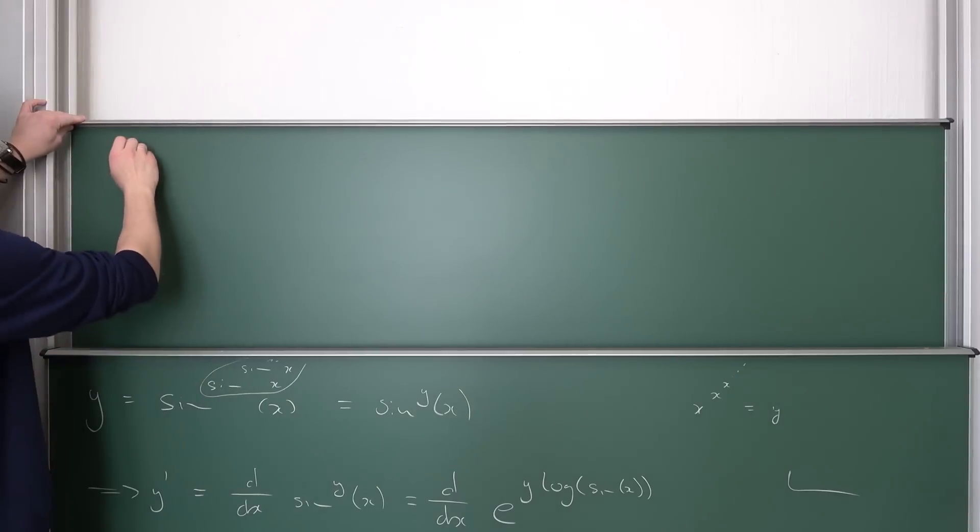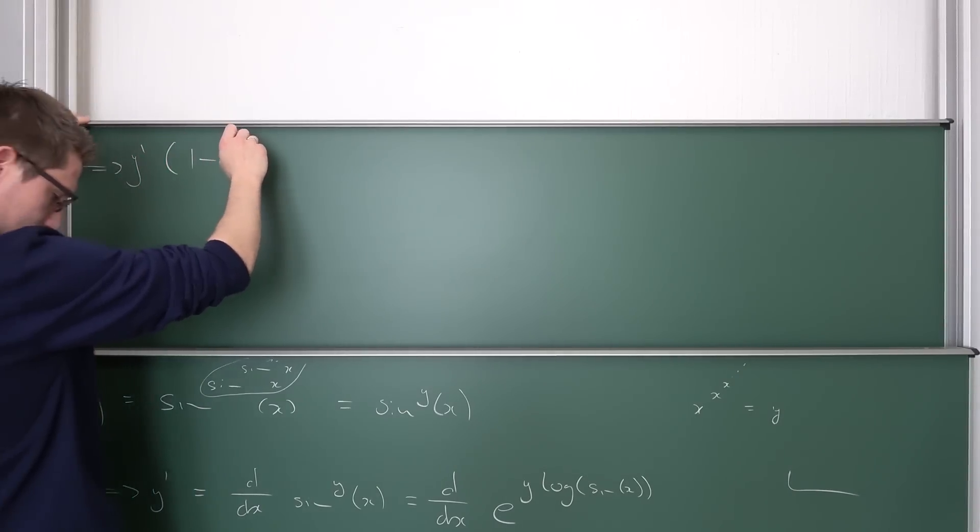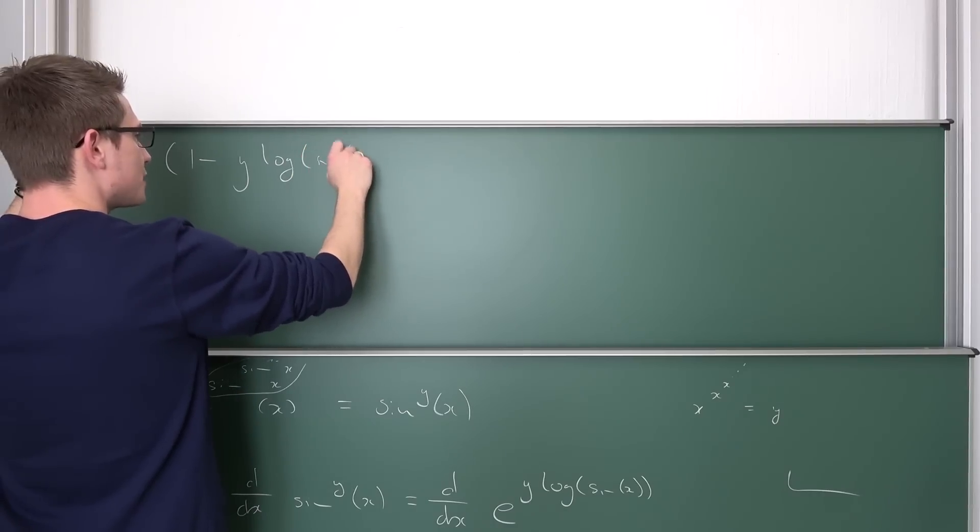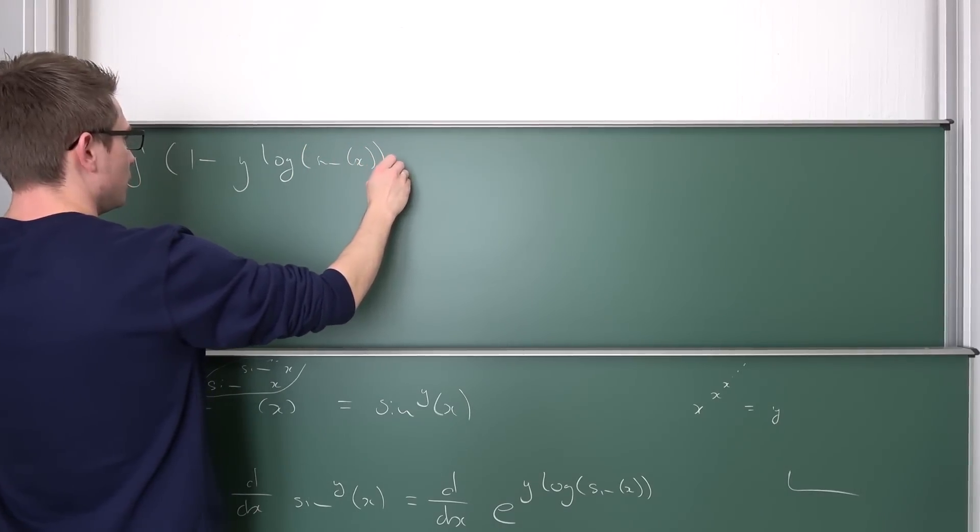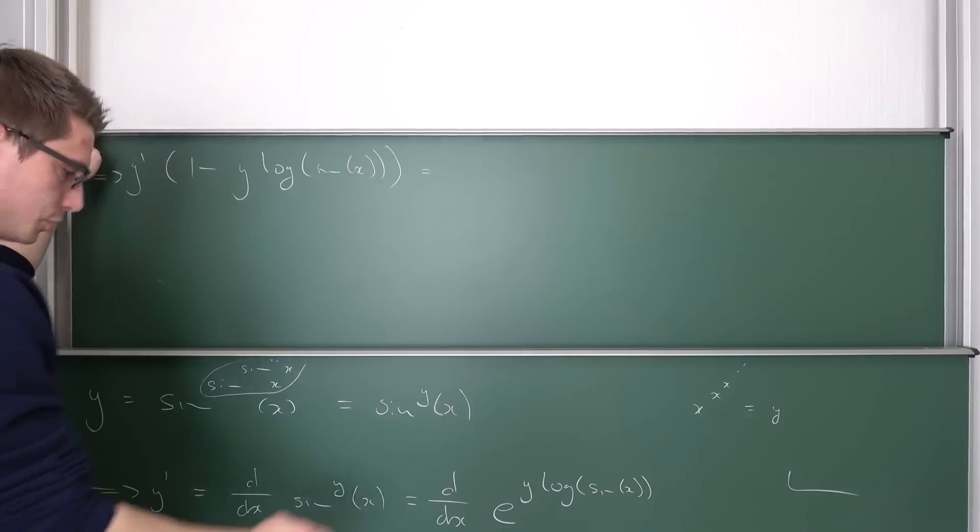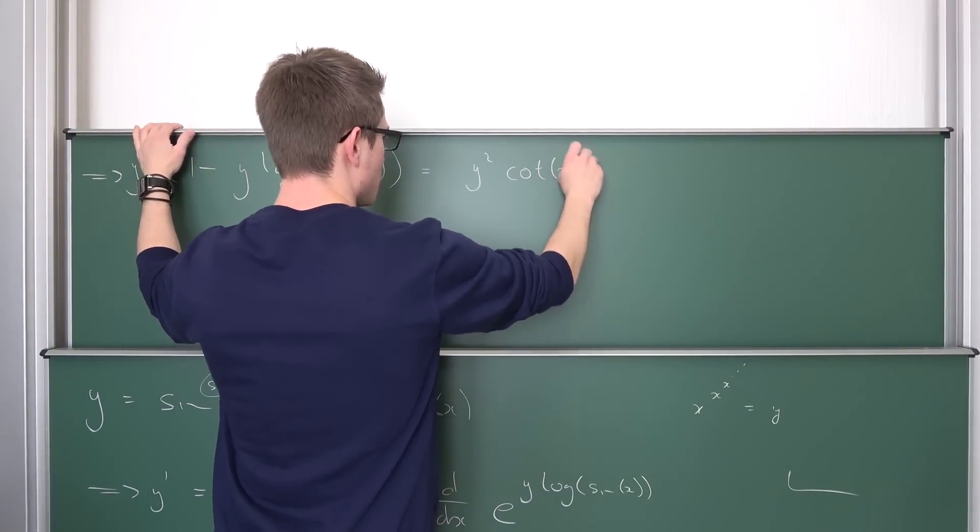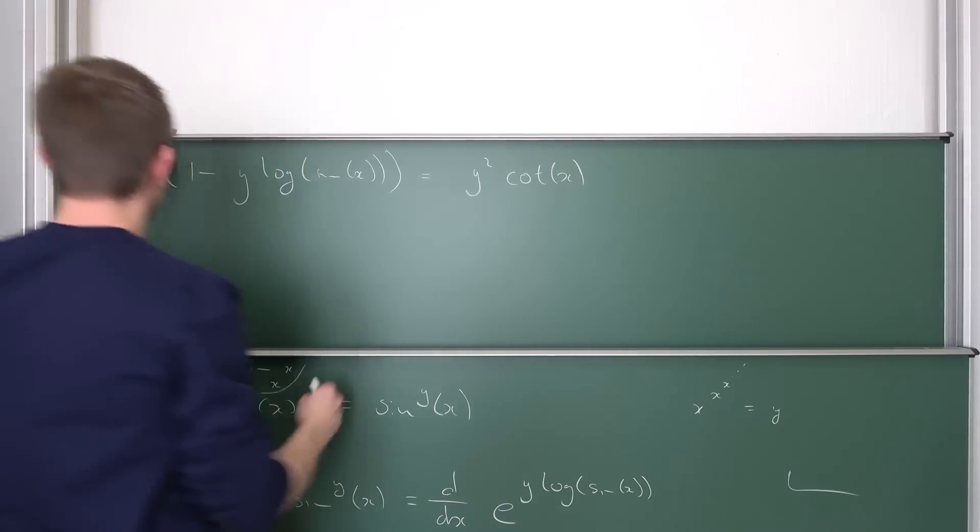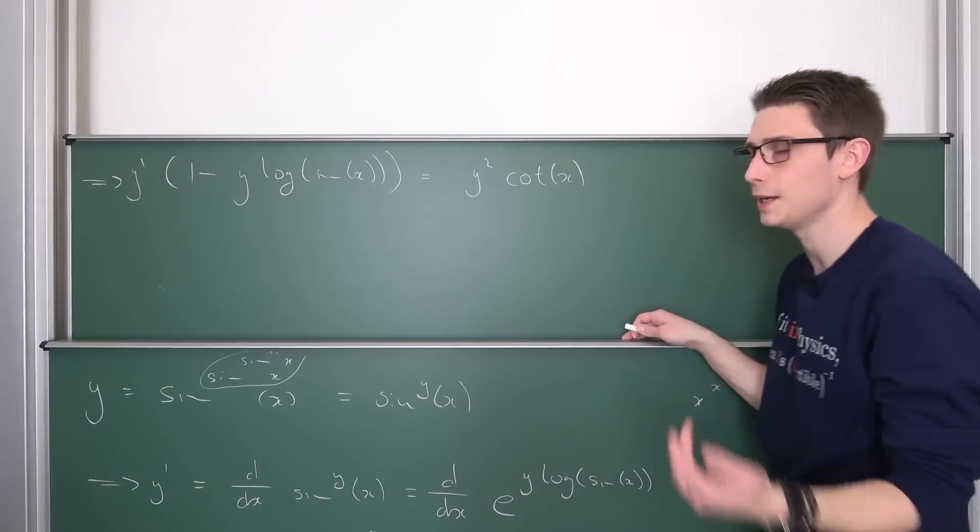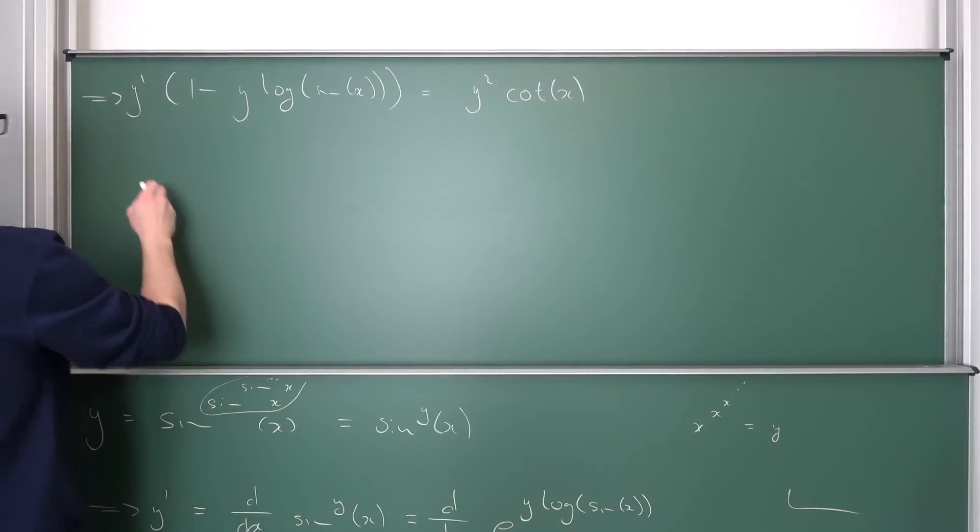So let me write it out real quick. By subtracting this on both sides, y prime, and then we have 1 minus y logarithm of sine of x, being equal to y squared cotangent of x. And now let us divide both sides by this. Let's resubstitute our expression for y and then we should be done. I mean, that's not a big deal, am I right?